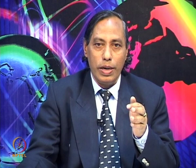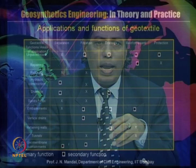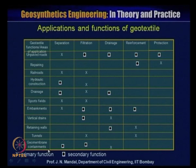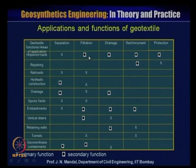Another slide shows geosynthetics function and application. Applications include unpaved road, repaving, railroad, hydraulic construction, drainage, sports field, embankment, vertical drain, retaining wall, tunnel, and geomembrane containment. For unpaved roads, the cross symbol indicates primary functions — separation and filtration — while dots indicate secondary functions: drainage, reinforcement, and protection. Geosynthetic material acts as a multi-function material, not just a single function.